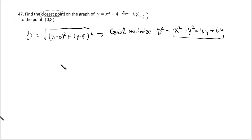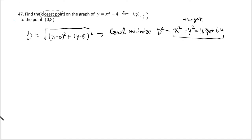The target is to minimize d² = x² + (y−8)² = x² + y² − 16y + 64. The curve y = x² + 4 is our constraint. Replacing y by x² + 4 in the target converts it to a function of a single variable x.